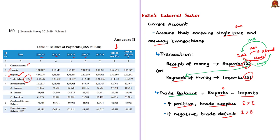These are the basics you need to know whenever you see a news article that discusses terms like trade deficit, exports, or imports. In this table you can see that the trade balance has always been negative, meaning there is always a trade deficit in every financial year — the imports are always more than the exports. Now let us come to the news article.